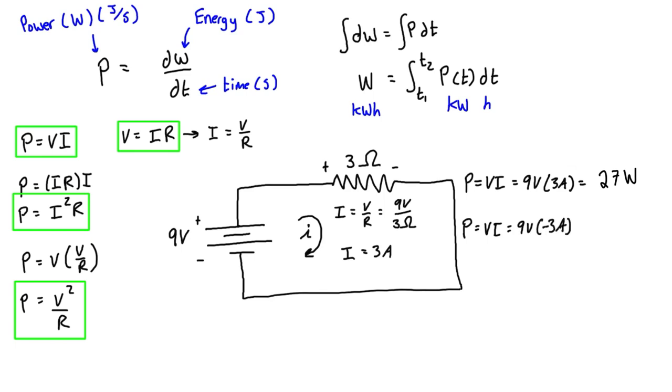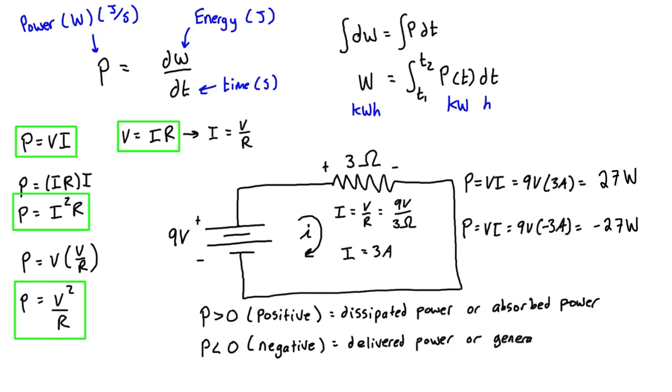For the voltage source, P = VI = 9 volts times negative 3 amps, which equals negative 27 watts. Positive power values represent dissipated or absorbed power, while negative power values represent delivered or generated power. This was for the voltage source, while the earlier result was for the resistor.